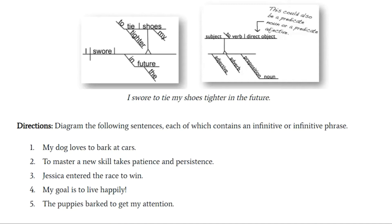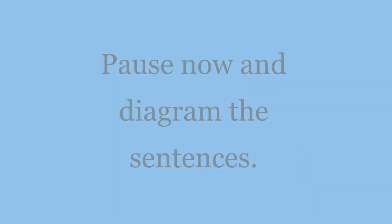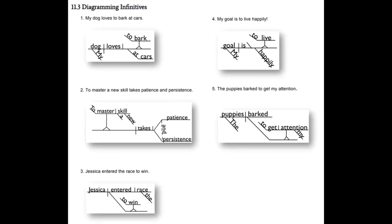Give these a shot and get some practice in. Mistakes are nothing to fear — as my daughter likes to say, mistakes are a chance to learn. Here are the answers for diagramming infinitives. Number one: 'My dog loves to bark.' Dog is the subject, loves what? Loves to bark — so 'to bark' is the infinitive functioning as a direct object, meaning it's functioning as a noun. 'To' is on the slanted line, 'bark' on the straight line, sitting on a forked wire.